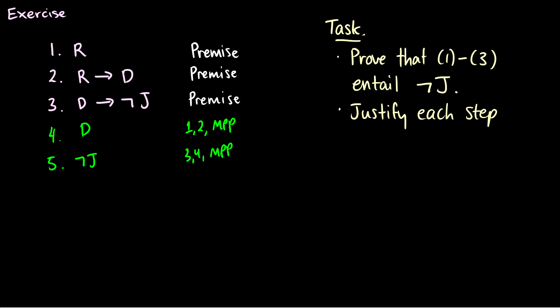Now, of course, that wasn't the only way to do things. We could have used hypothetical syllogism. So using two and three, we could have merged R arrow D and D arrow J together to get R arrow not J using hypothetical syllogism. And then we could have applied modus ponens on lines one and four. So two different ways to do the same proof or to get the same conclusion.